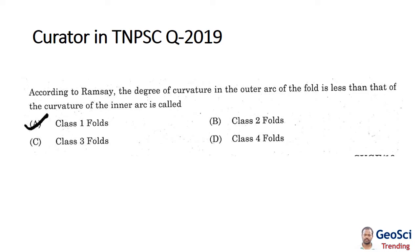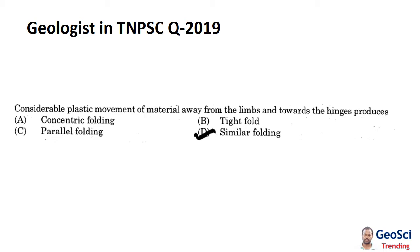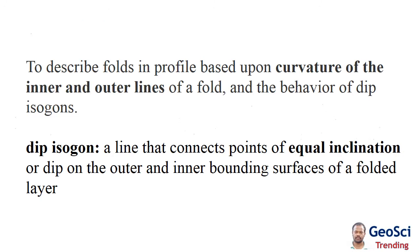Considerable plastic movement of material away from the limb and toward the hinges produces similar folding. John Ramsey proposed a classification scheme for folds that is used to describe the fold in profile based on the curvature of inner and outer lines of the fold and the behavior of dip isogons. Dip isogons are lines that connect points of equal inclination or dip on the outer and inner bounding surfaces of the folded layer.